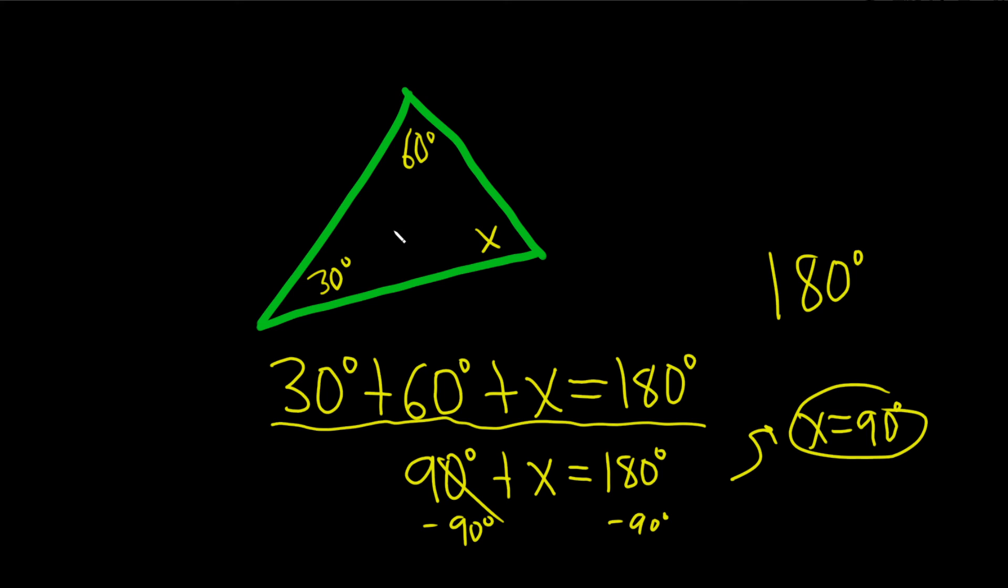So whenever you're looking for an angle inside a triangle and they give you two of the angles, all you have to do is add up all the angles inside the triangle, set it equal to 180, and then solve for the missing angle. I hope this video has been helpful. Good luck.